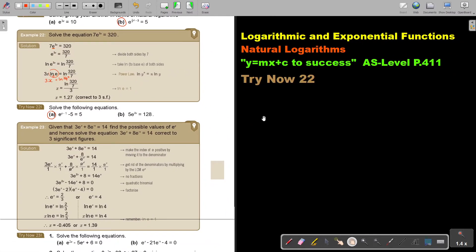Let's start. Number A. So this is going to be e to the power x minus 1 minus 5 is equal to 5.